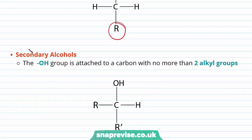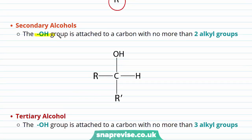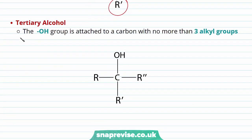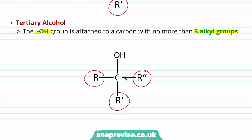In our secondary alcohols, the hydroxyl group is attached to a carbon with no more than two alkyl groups, which we can see here and here. These can be the same alkyl group or they can be different. And finally, in our tertiary alcohols, the hydroxyl group is attached to a carbon with no more than three alkyl groups — we have one, two, three alkyl groups in our tertiary alcohol.